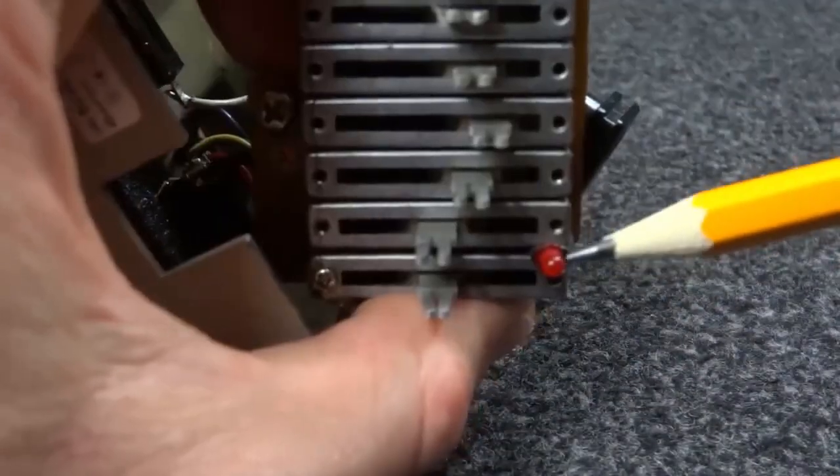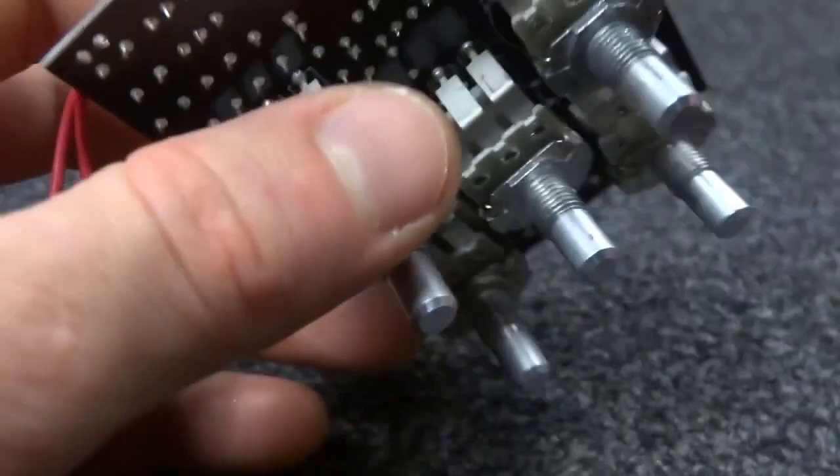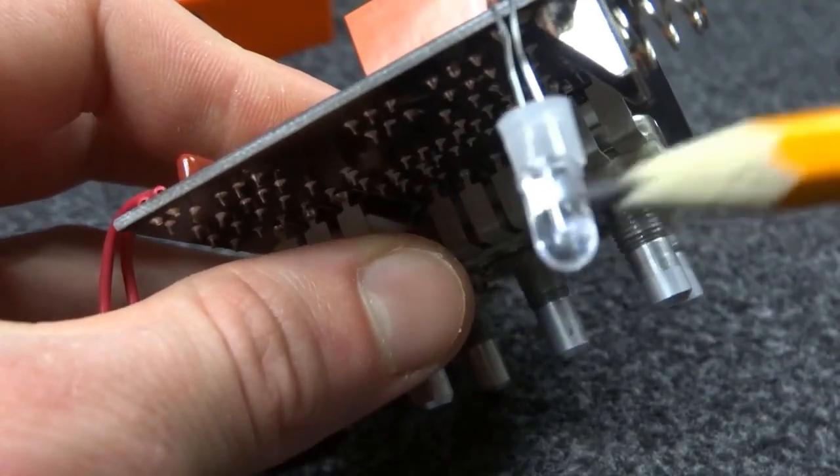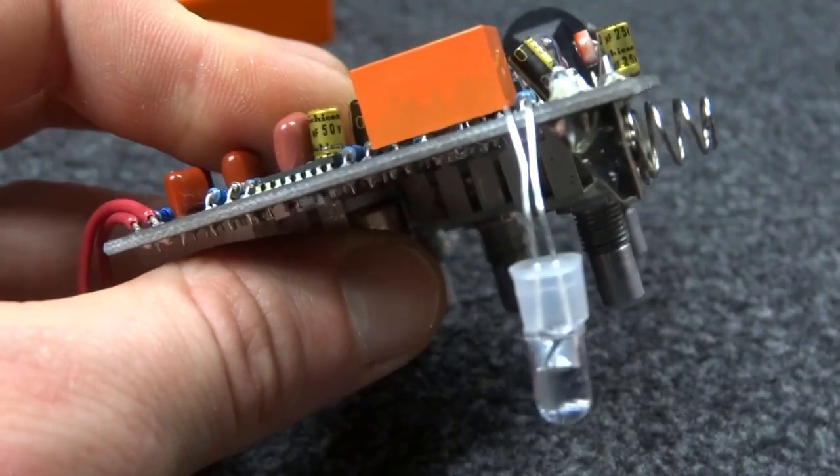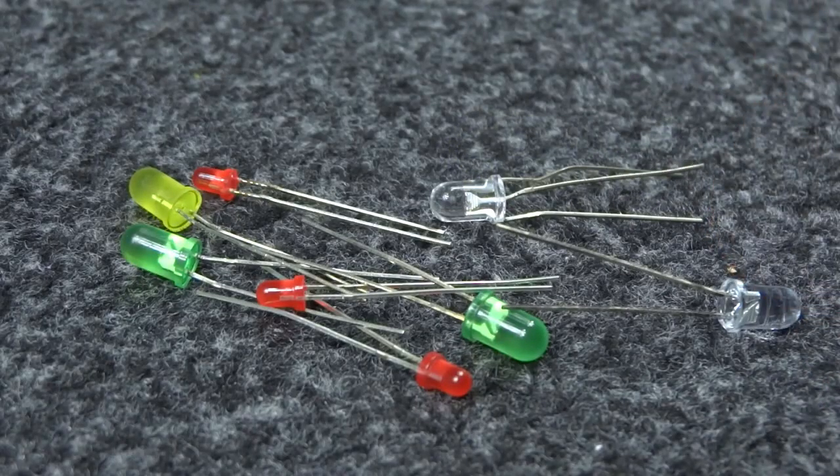Those are LEDs, light emitting diodes. You can see them every day in a lot of devices. Simplest role is to indicate pedal on and off. But they can be also useful with creating distortion pedal because they are able to clip and compress your signal.